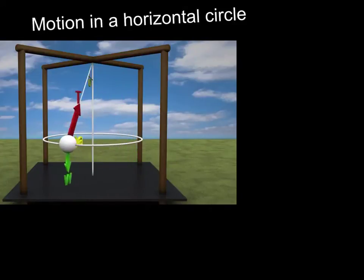We're going to take a look at motion in a horizontal circle. One of the easiest ways to generate motion in a horizontal circle is called the conical pendulum. An object is suspended by a chord and then projected sideways and it starts to describe a horizontal circle.